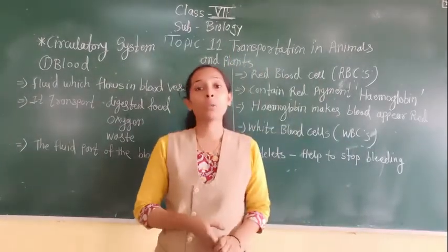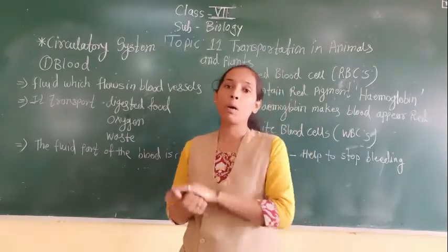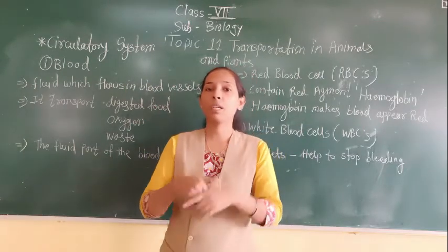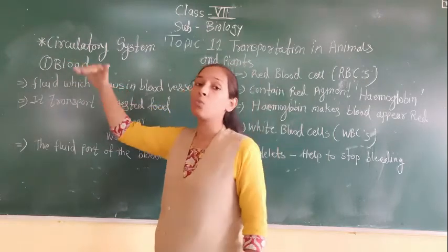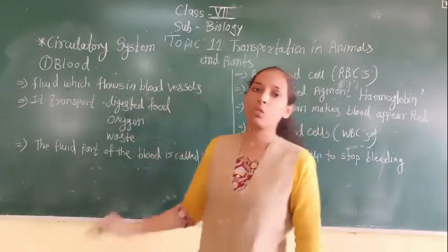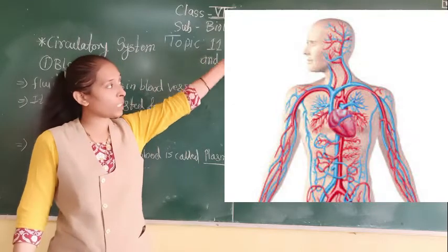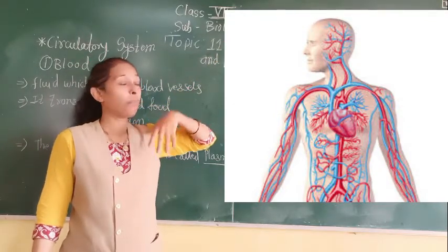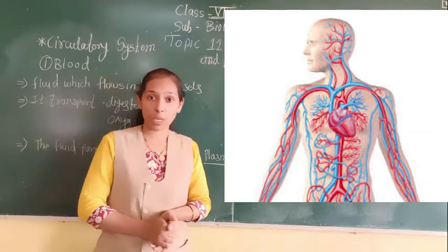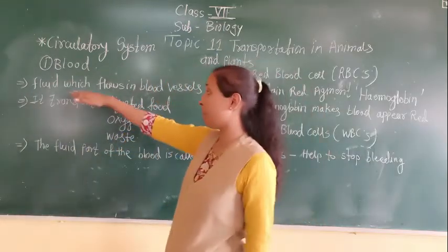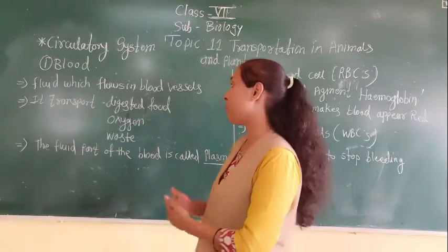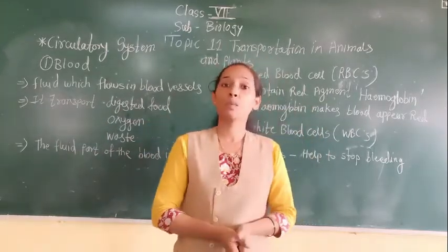In this lesson we are going to discuss the circulatory system and how it works. This circulatory system consists of different parts; the first part we are going to discuss is blood. Blood is a fluid which flows in blood vessels. In this image you can see different blue and red color lines — all those lines represent blood in our body and form a network of blood vessels. Blood is a fluid which flows in blood vessels and helps to transport the digested food which gets digested in the small intestine.